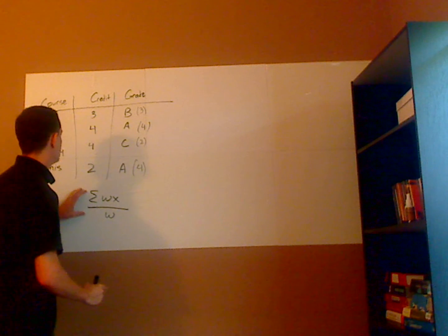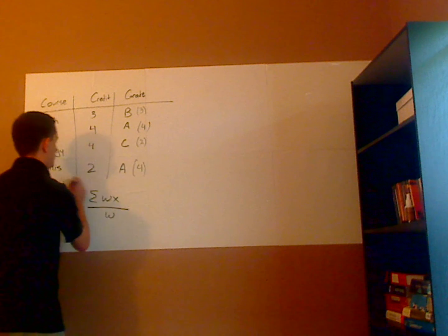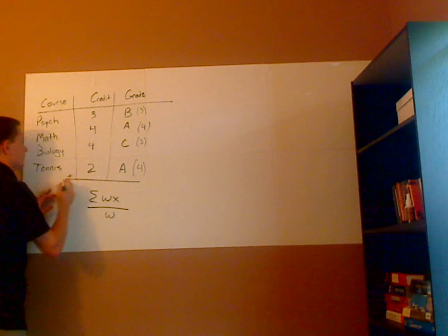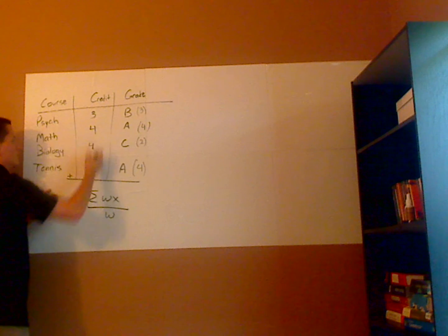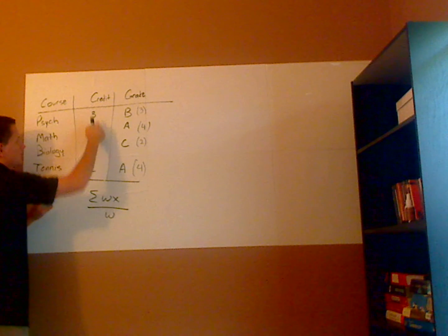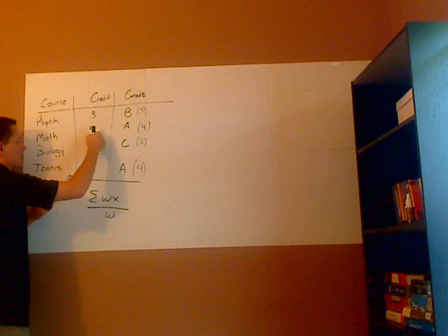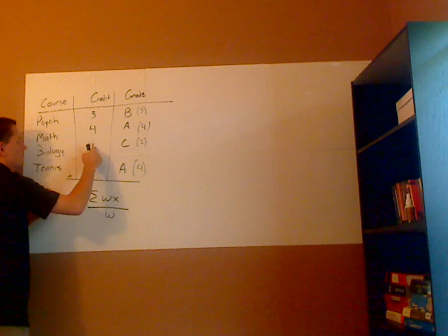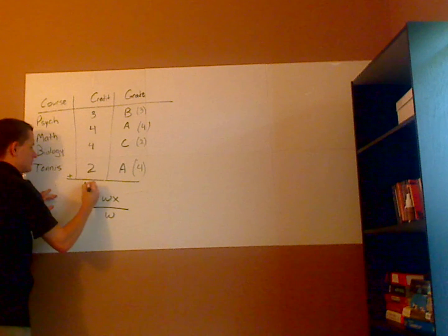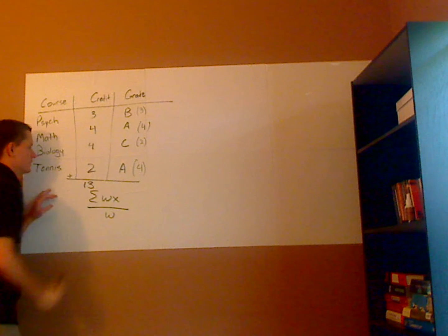So here, my total weight would be all these credit hours added together. So three plus four is seven, plus four is eleven, plus two is thirteen.